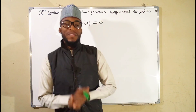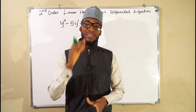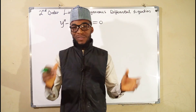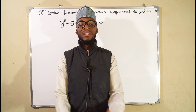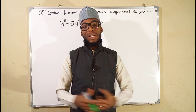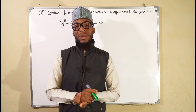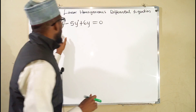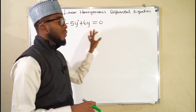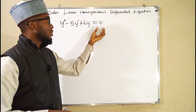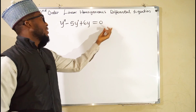Hello, good morning viewers. In this tutorial I'm going to show you how to solve a second-order linear homogeneous differential equation. In our previous lesson we saw an introduction to this topic. The equation given to us is y'' - 5y' + 6y = 0. It is homogeneous because the right-hand side is 0, and it is second-order because we have the second derivative of y.